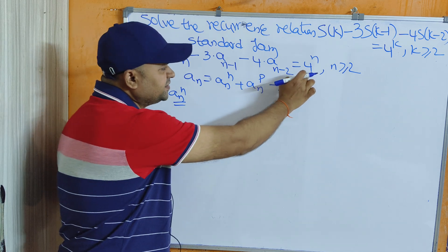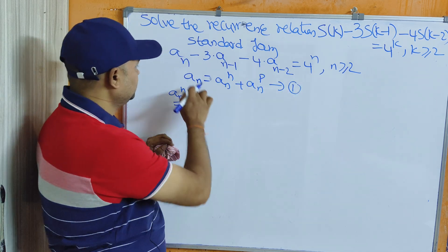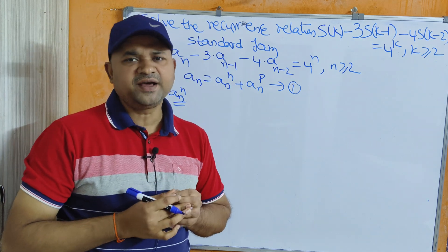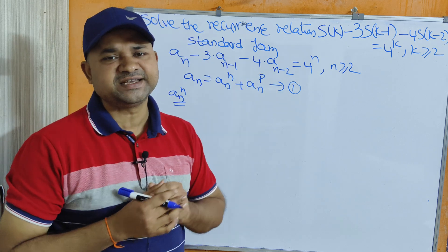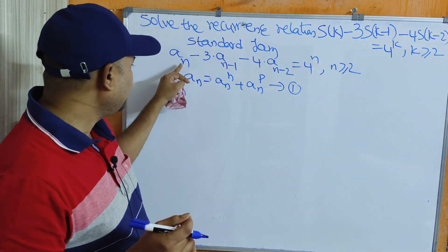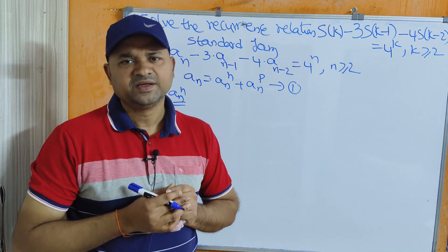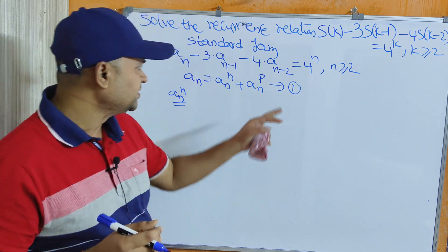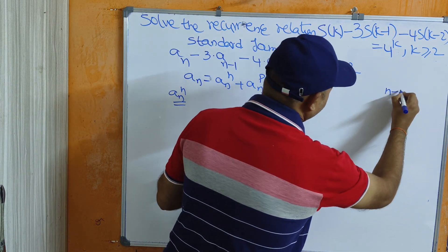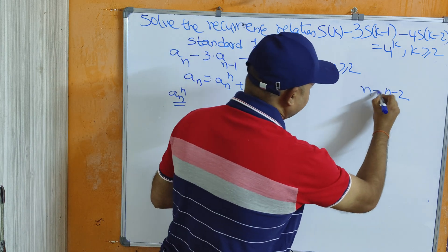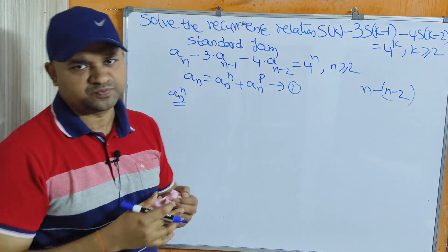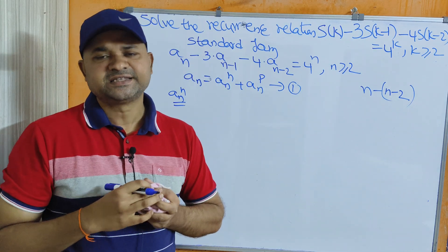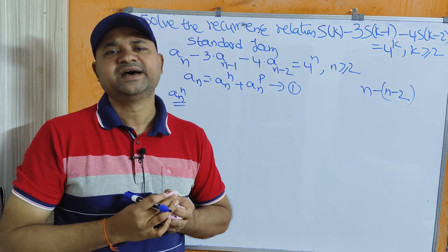First let us calculate the homogeneous part. For the homogeneous part, we substitute 0 on the right-hand side. We know the auxiliary equation. First, let us determine the order of the homogeneous recurrence relation. To determine the order, we subtract the minimum subscript from the maximum subscript. Here the minimum subscript is n-2 and the maximum is n, so the order is n - (n-2) = 2. So the given recurrence relation is a second-order non-homogeneous recurrence relation.